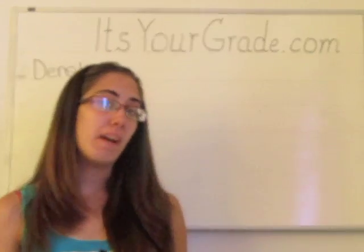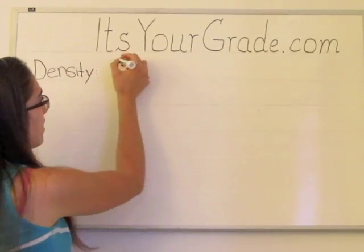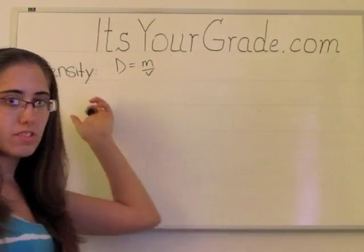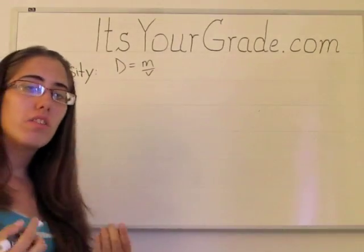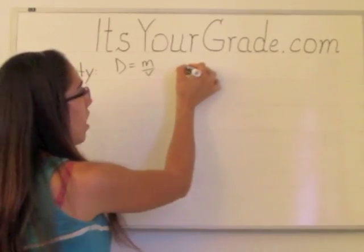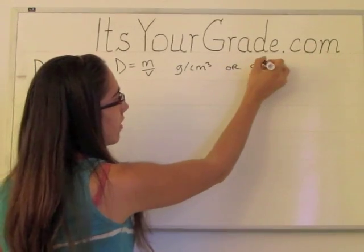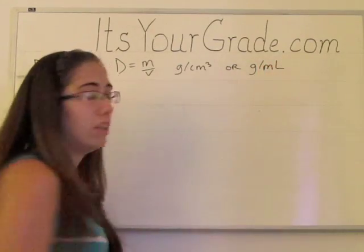Density is a substance's mass divided by its volume. We symbolize it by d equals m over v, where d stands for density, m stands for mass, and v stands for volume.